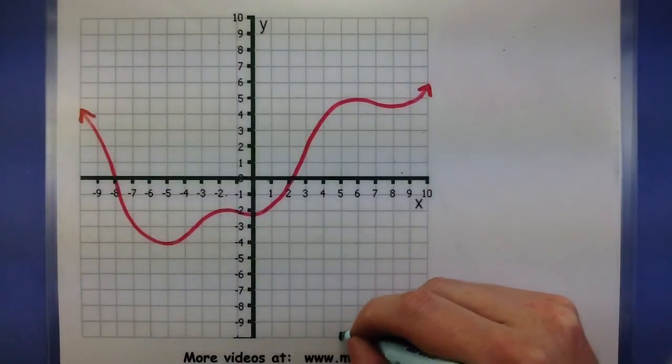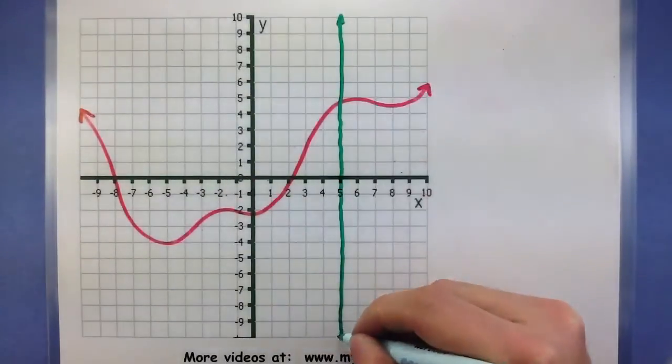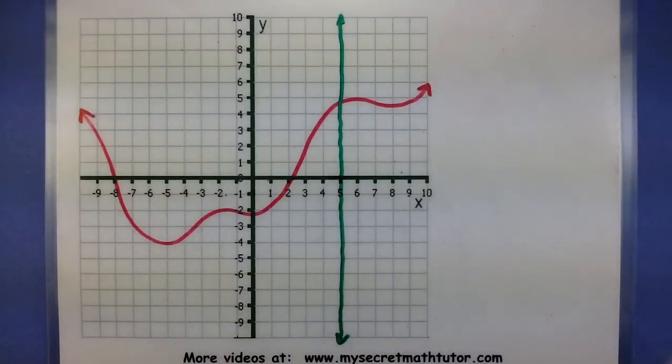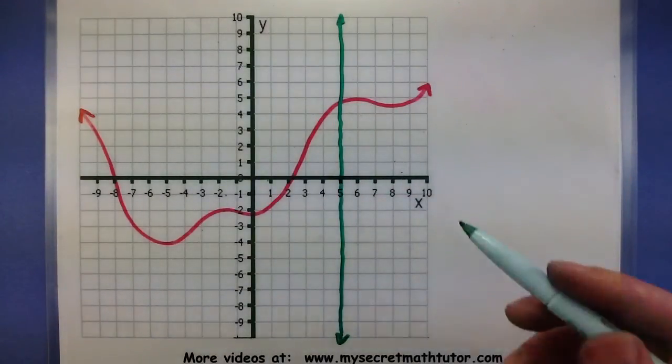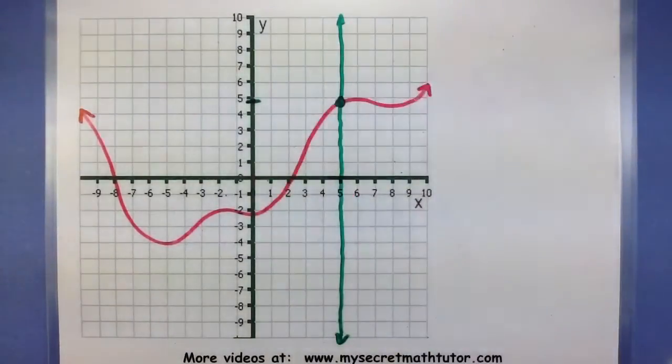When we draw a vertical line, we are essentially testing out our first component. It's like we're saying, all right, my first component is five, does it get paired with only one in the second component? Well if it only crosses once, that's an indication that it does.